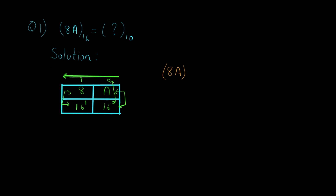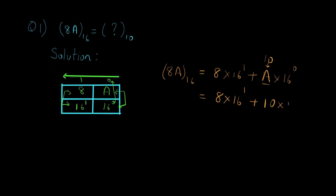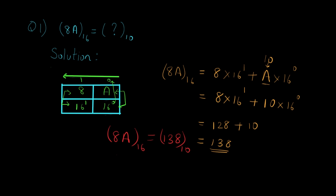So here is the calculation. 8A in hexadecimal is equal to 8 into 16 raised to 1 plus A into 16 raised to 0. Now you must be wondering how to multiply A into 16 — that's what we saw the table for. We know the value of A is actually 10. So this gives us 8 into 16 raised to 1 plus 10 into 16 raised to 0, which is equal to 128 plus 10, giving us 138. So 8A in hexadecimal is equal to 138 in decimal.